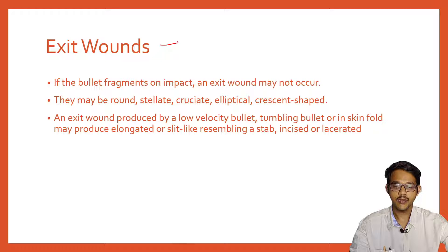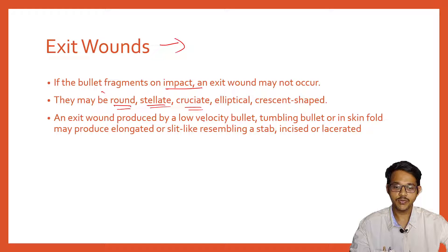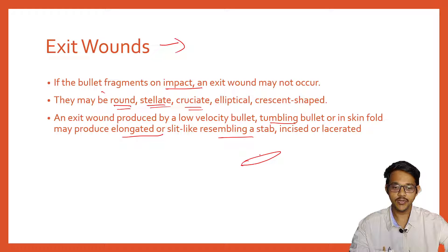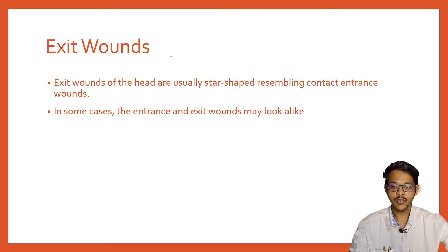Exit rifle wounds: the bullet may fragment on impact and an exit wound may not always occur. The bullet may fragment in the body and be lost inside. Exit wounds are typically round, stellate, cruciate, elliptical, or crescent-shaped. Exit wounds produced by low-velocity bullets may cause tumbling, and the skin force may produce elongated or slit-like wounds resembling a stab wound.